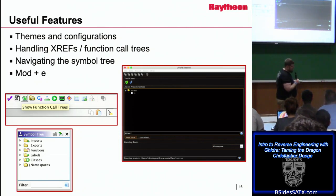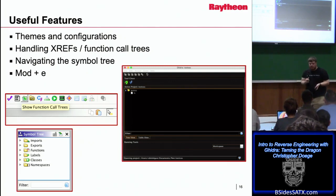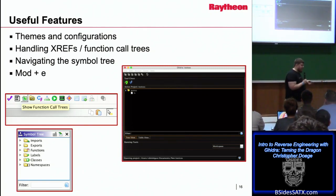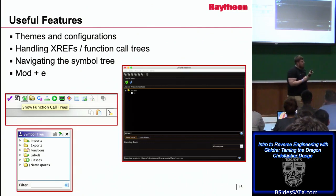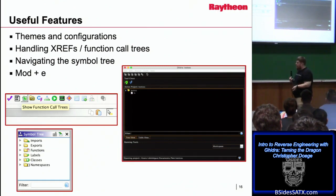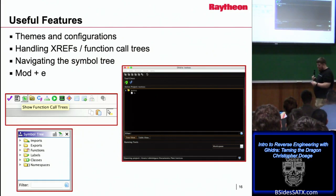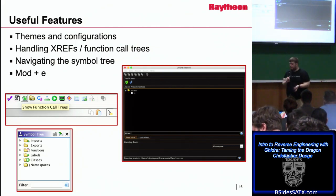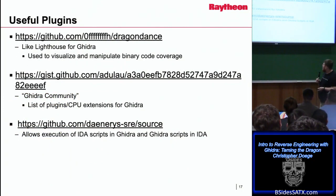XREFs work a little differently in Ghidra — you don't just press X like in IDA. They're typically located in the disassembly view or accessed through a UI button. The symbol tree is a panel I use a lot more with Ghidra than graph view in IDA. It gives you access to imports, exports, functions, labels, classes, and namespaces — we'll go through that in the demos.